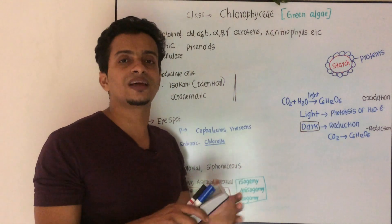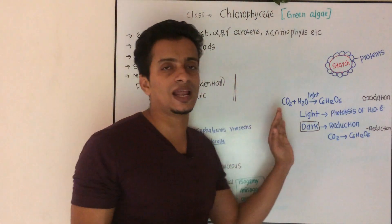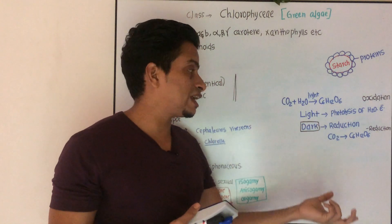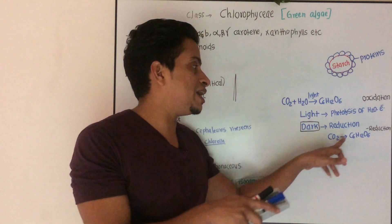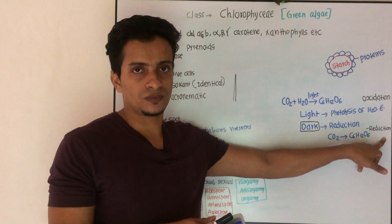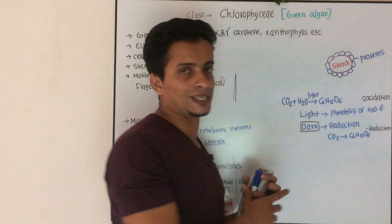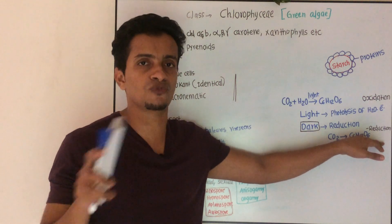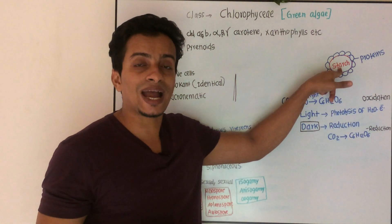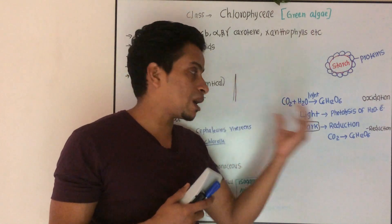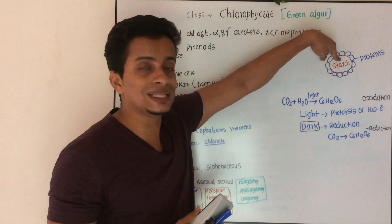The dark reaction does not require light — light is essential only in the light phase. In the dark reaction, oxygen is removed and hydrogen is added to the process — that is reduction. The carbohydrate produced can be stored in complex form as starch. This photosynthetic product is stored in the structure called pyrenoids.